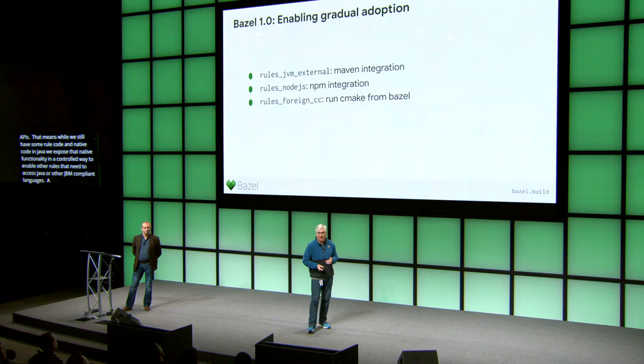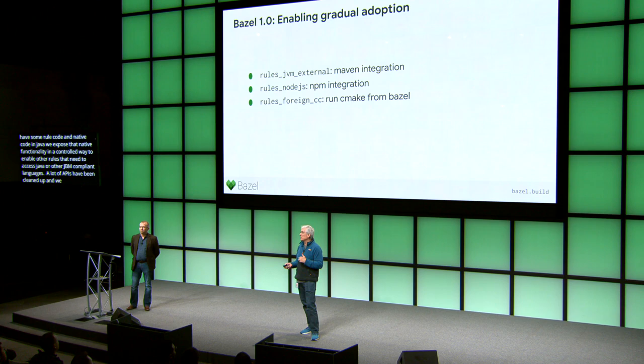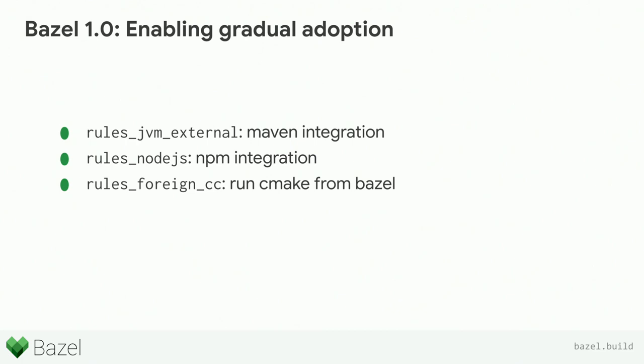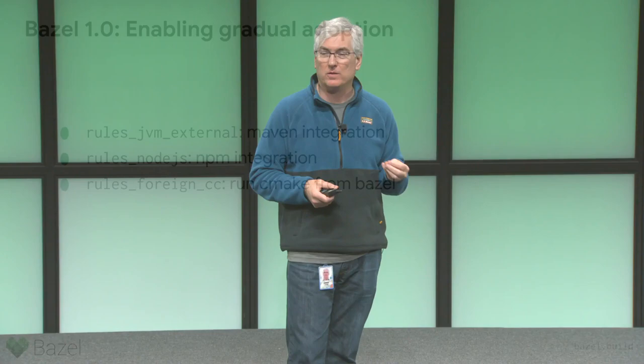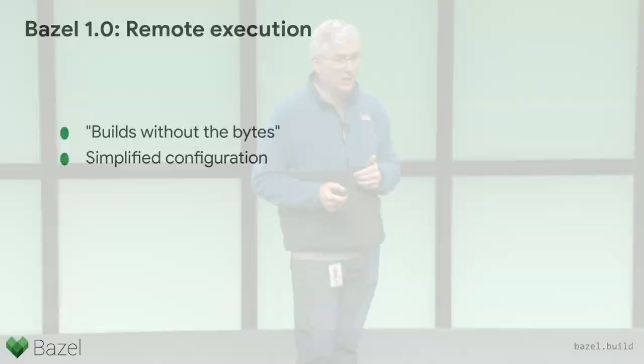We've done a lot of work enabling gradual adoption of Bazel, so you don't have to move every part of your build to Bazel all at once. We recognize that people often want to build their dependencies using their native build system — whether make or something else — and then reference those dependencies in a Bazel build. For Maven integration, we have a way to access Maven builds; for NPM for Node, you can do that; and you can run CMake as a subprocess for Bazel in a controlled way.